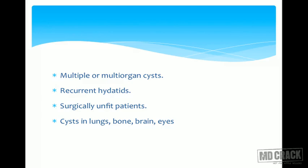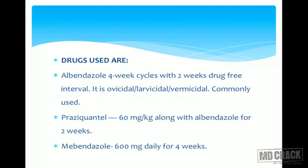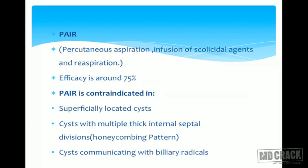Contraindications for drug therapy include very large cysts likely to rupture (where surgery is straightforward), honeycombing with multiple septate infected cysts (which need drainage), calcified cysts, and pregnancy. Drugs used: albendazole in four-week cycles with two-week drug-free intervals — it is ovicidal, larvicidal, and vermicidal, and is the most commonly used. Praziquantel at 60 mg/kg can be used along with albendazole for two weeks. Mebendazole 600 mg daily can be used for four weeks.